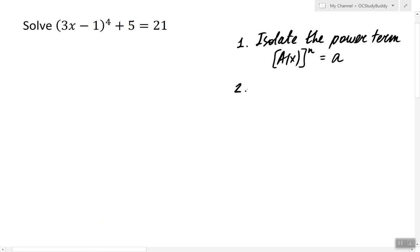In the next step we want to take the nth root of both sides, but we can only do that for odd n. So if n is odd then we write this.